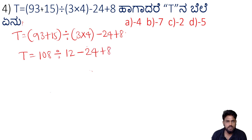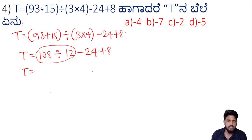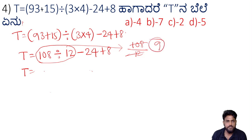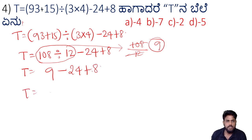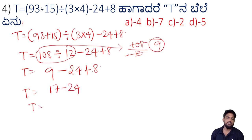1-08 divided by 12. This is 1-08 divided by 12. So if we go to the next question, minus 24 plus 8. 9 plus 8 is 17 minus 24. 17 minus 24. This is the same question.